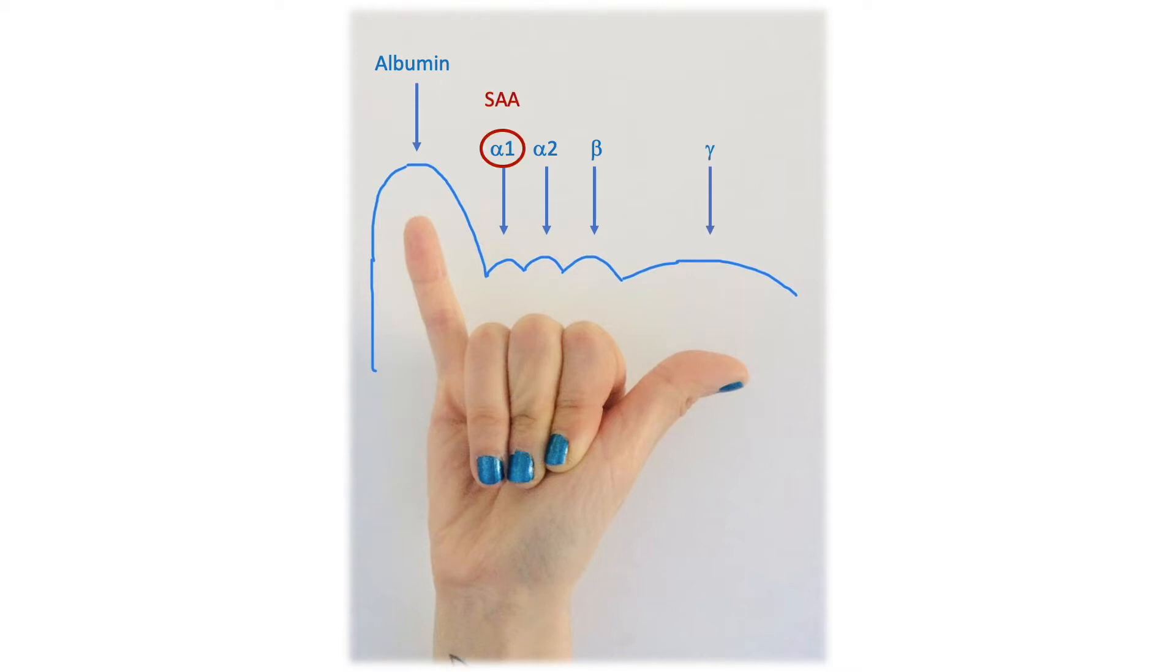Within alpha-1 globulins there is serum amyloid A, within alpha-2 the haptoglobin, but also hemoglobin if there is hemolysis.